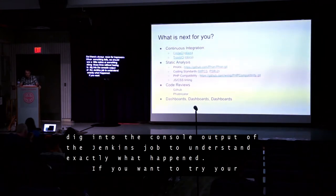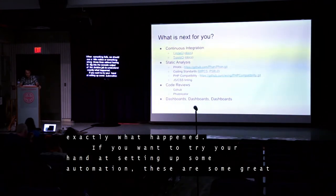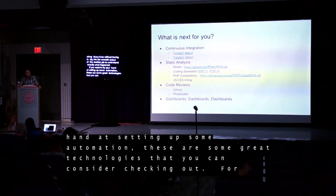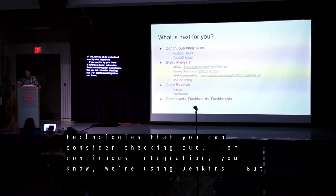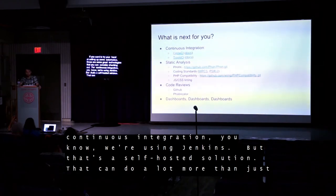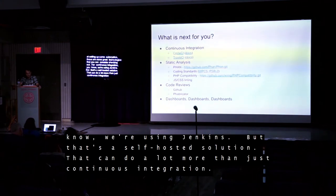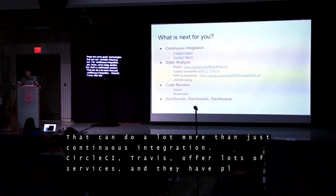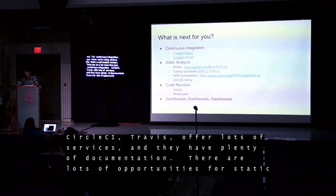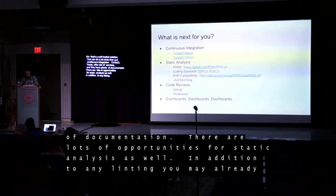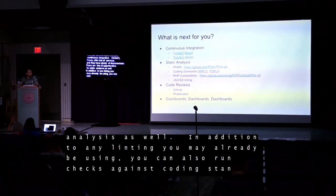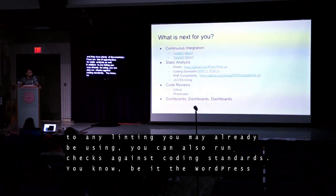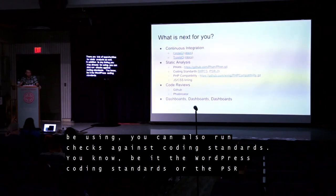If you want to try your hand at setting up some automation, these are some great technologies to consider. For continuous integration, we're using Jenkins, which is a self-hosted solution that can do a lot more than just continuous integration. CircleCI and Travis offer hosted solutions as a service with plenty of documentation. There are also lots of opportunities for static analysis — in addition to linting, you can run checks against coding standards, be it the WordPress coding standards or the PSR standards.